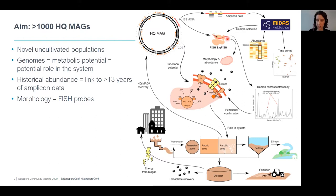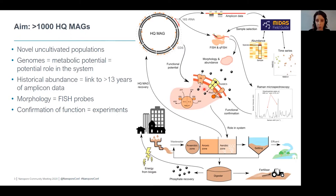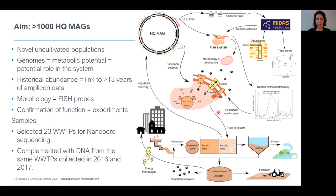We can also take this a step further and confirm their function using experiments. Once we can target organisms with FISH probes, we can see exactly which cells to investigate further. We can use Raman microspectroscopy to confirm whether or not an organism is accumulating phosphate, confirming its role in the system.